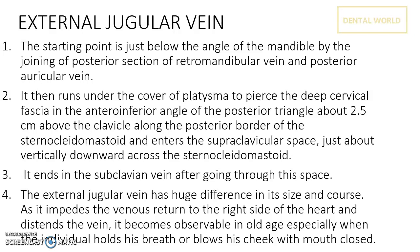The external jugular vein has huge variation in its size and course. As it comes down towards the heart it provides venous return to the right side of the heart, and this causes distension of the vein. Such a case is observed in old age, especially when the individual holds his breath or blows his cheeks when his mouth is closed.